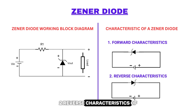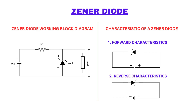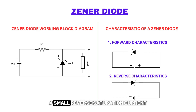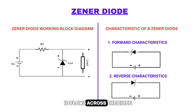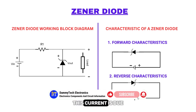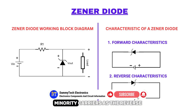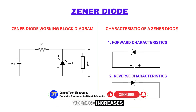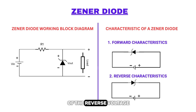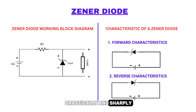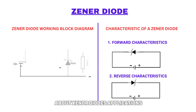Reverse characteristics of the Zener diode: when a reverse voltage is applied, a small reverse saturation current, IO, flows across the diode. This current is due to thermally generated minority carriers. As the reverse voltage increases to a certain value, the reverse current increases drastically and sharply.